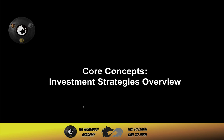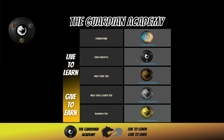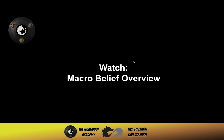Guardian Academy core concepts — investment strategy overview. This is about closing the disconnect between what you think you're doing and what you're actually doing. Sort that out and you start to get power over the outcome. This is one of the last core concepts, which helps determine the base case — a combination of investment strategy and macro belief. Make sure you've been through the macro belief overview so you can develop your overall operating system.